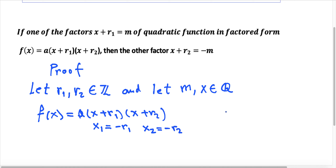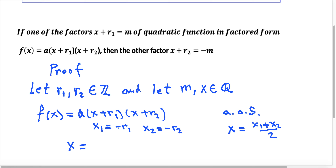The axis of symmetry — I can use the midpoint formula: x equals (x1 plus x2) divided by 2. In other words, x is going to be equal to (minus r1 plus minus r2) divided by 2, which is (minus r1 minus r2) divided by 2.